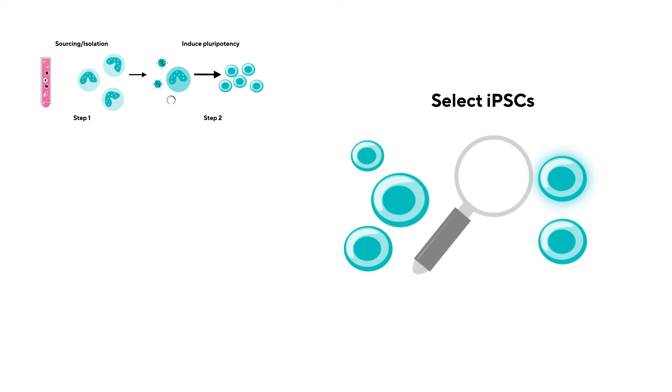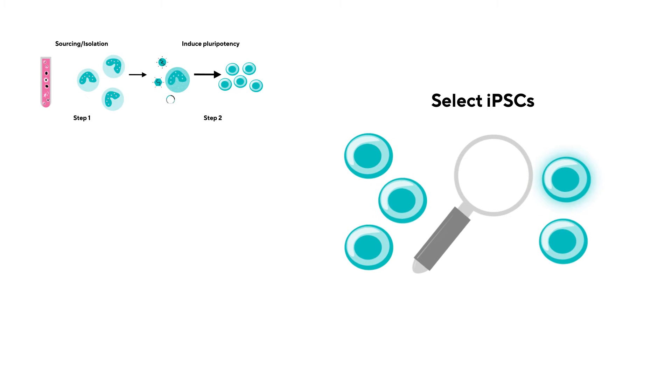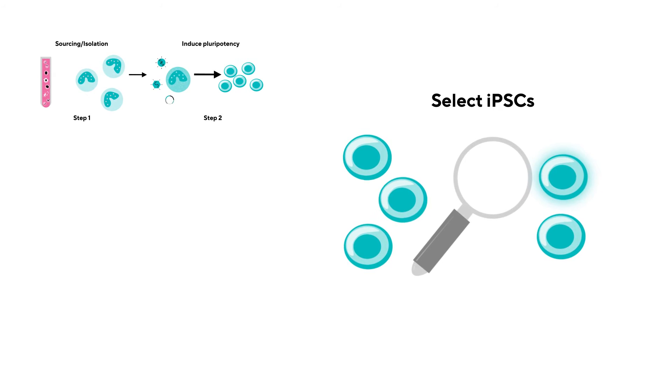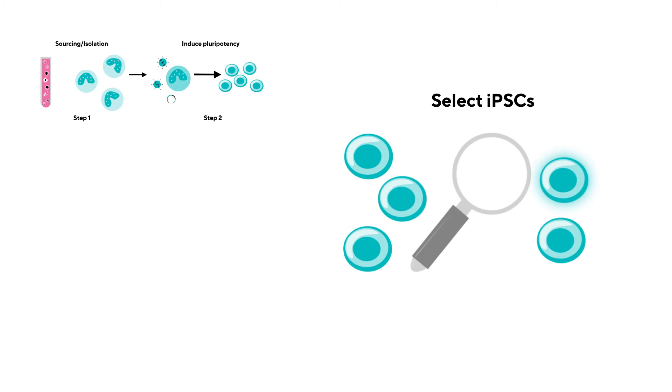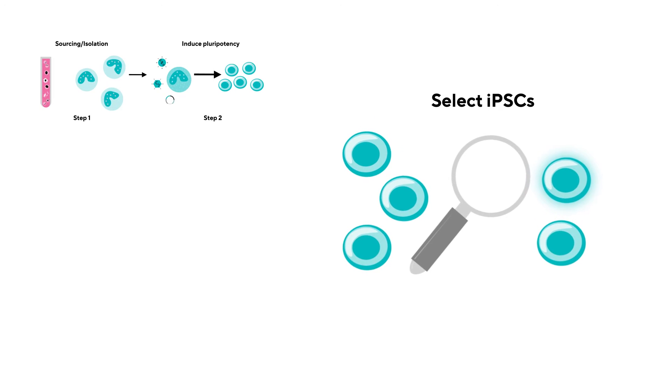Select iPSCs. Once induced, use pluripotency markers to select target cells. Evaluate and compare individual iPSCs for pluripotency and differentiation with advanced techniques to ensure the best clones are selected moving forward.